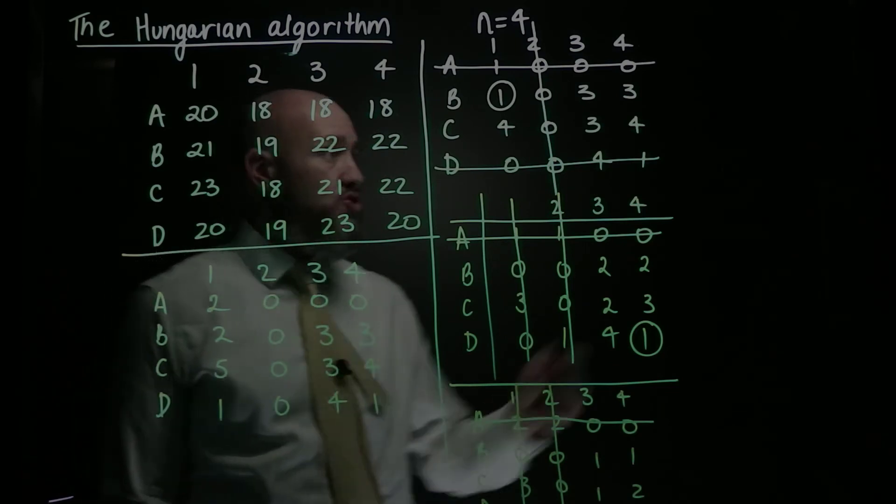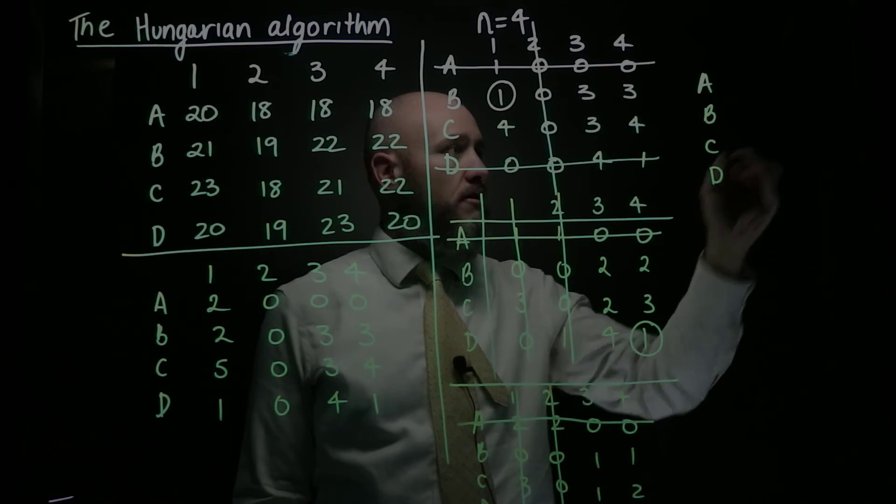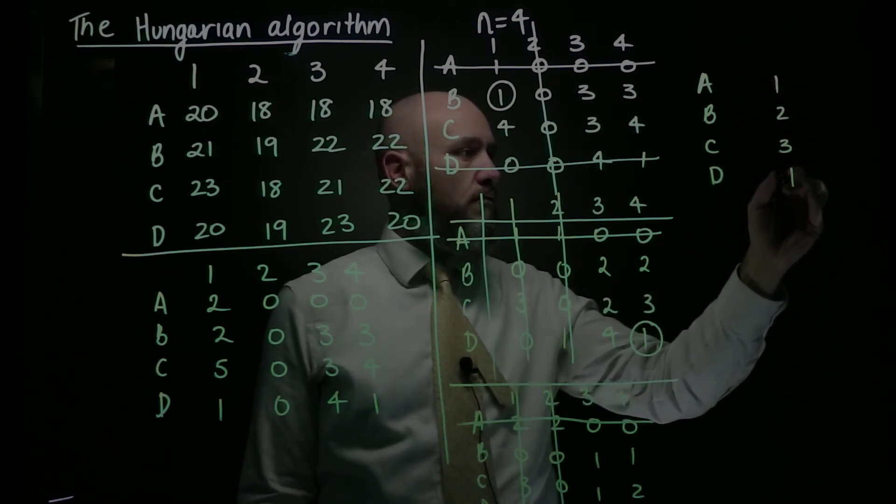So now I'm onto my bipartite graph. So I get over here and I've got A, B, C and D, 1, 2, 3 and 4.